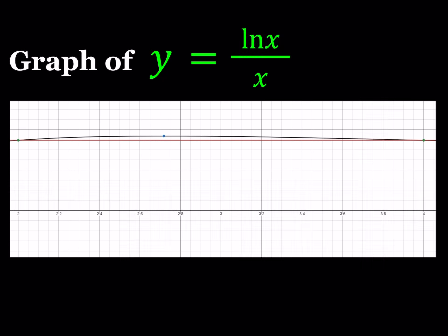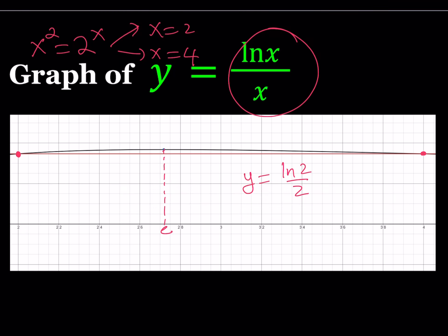So if we zoom in, we'll notice that this function makes a maximum, as we verified before, at x equals e. And then it is going to have an intersection point here and here. The horizontal line, which is red, is the graph of y equals ln 2 over 2. And that intersects the graph of y equals ln x over x at exactly two points, at x equals 2 and at x equals 4. Therefore, our equation, which was given as x squared equals 2 to the power x, has two solutions, x equals 2 and x equals 4. And those are the only solutions. And this brings us to the end of this video.